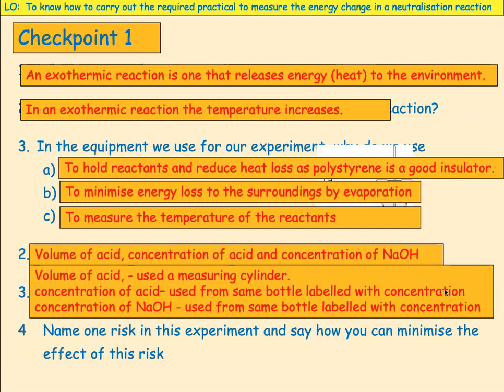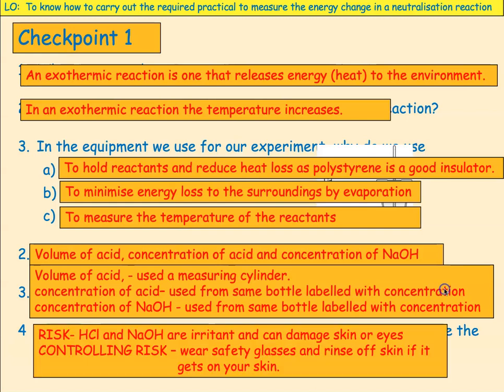Name one risk in this experiment and say how you would minimise it. We're using acids and alkalis. The sodium hydroxide and hydrochloric acid are irritants — they can damage your skin. If you get them on your skin you need to wash it off. They can get into your eyes and be very serious, so to prevent that you would wear safety glasses.